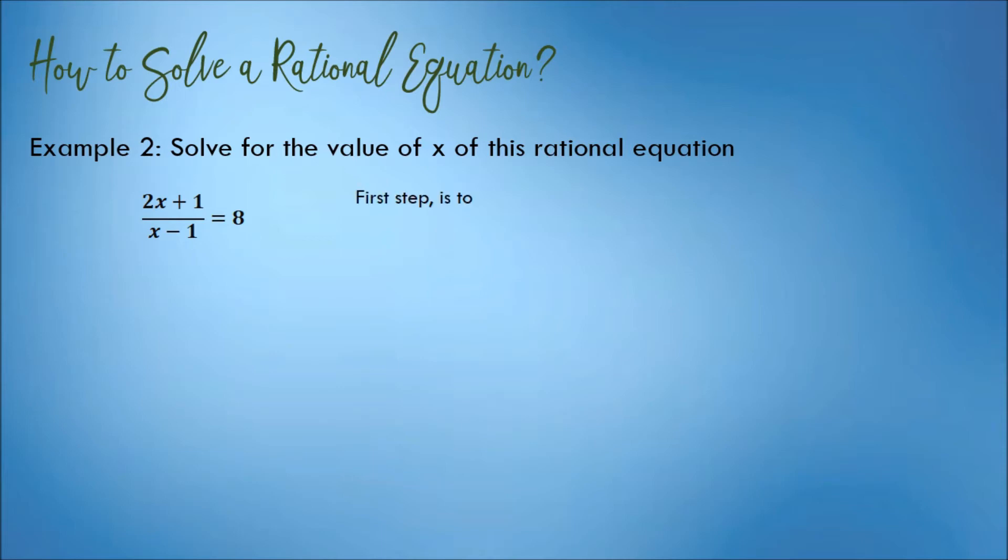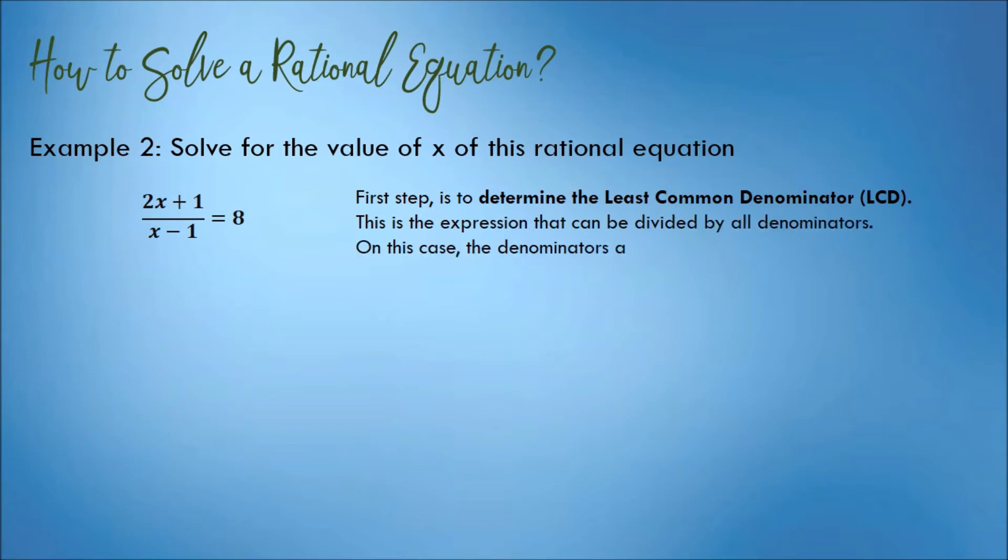The first step is to determine the least common denominator, or LCD. The LCD is the expression that can be divided by all denominators. On this case, the denominators are x minus 1 and 1.